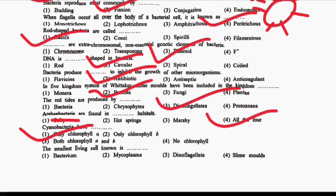Next question: the smallest living cell known is DASH. Option 1: Bacterium. Option 2: Mycoplasma. Option 3: Dinoflagellates. Option 4: Slime mold. The correct answer is Option 2, that is Mycoplasma. Mycoplasma lacks a cell wall and is the smallest known living organism.